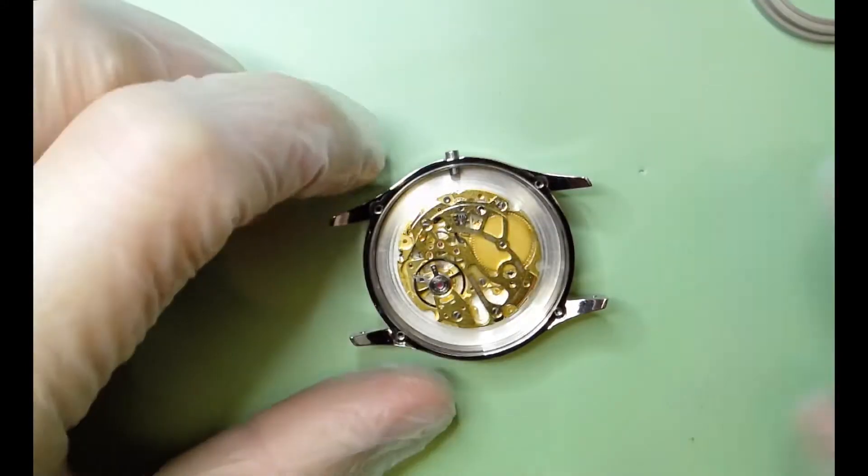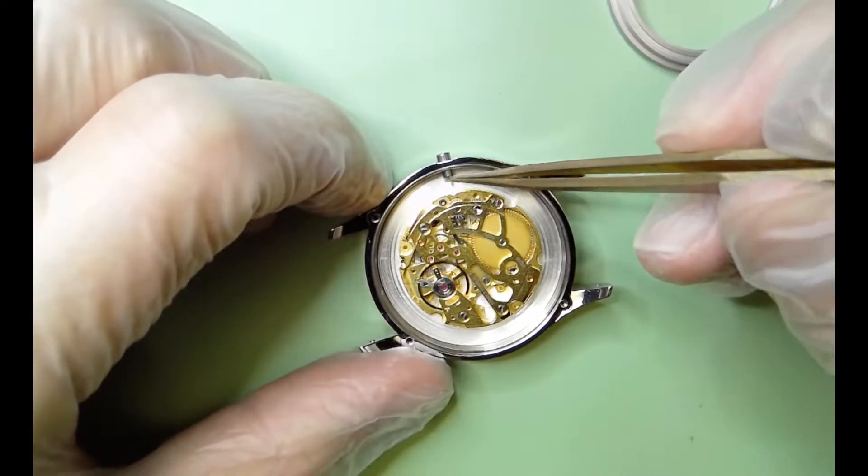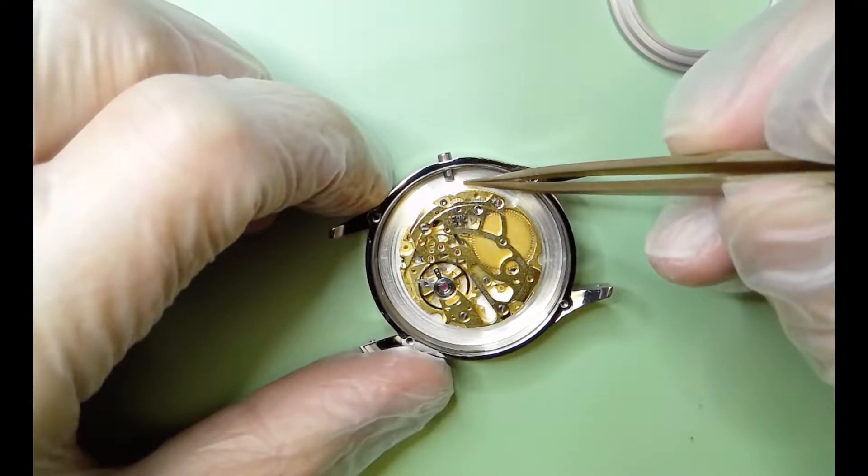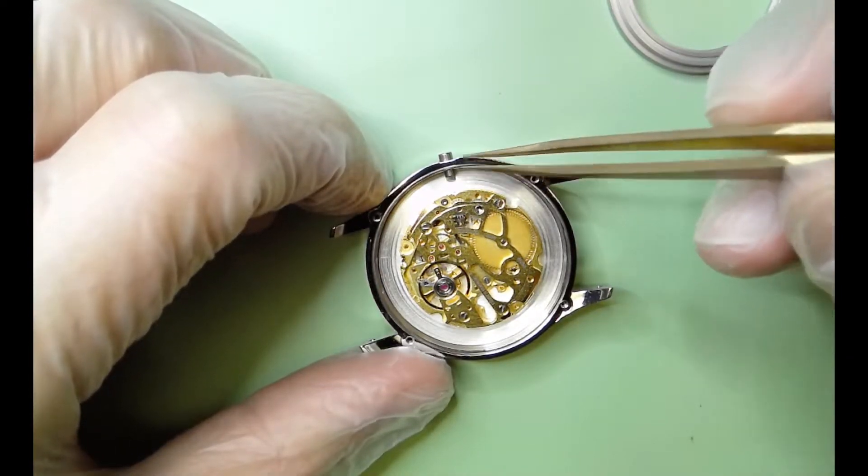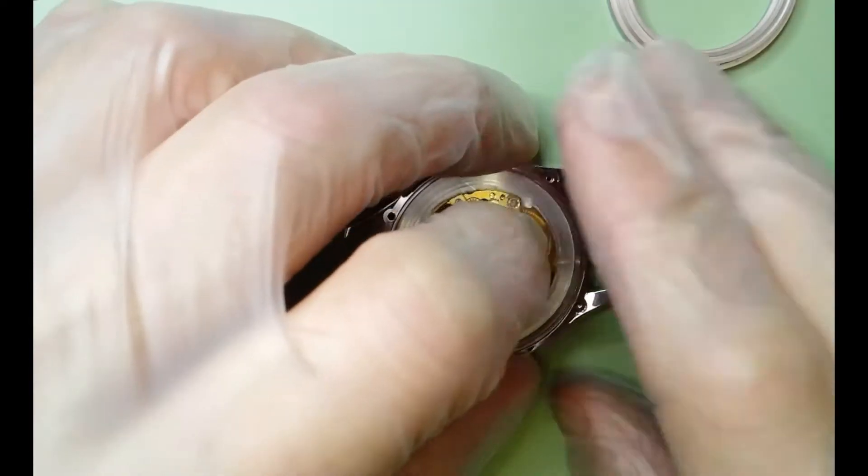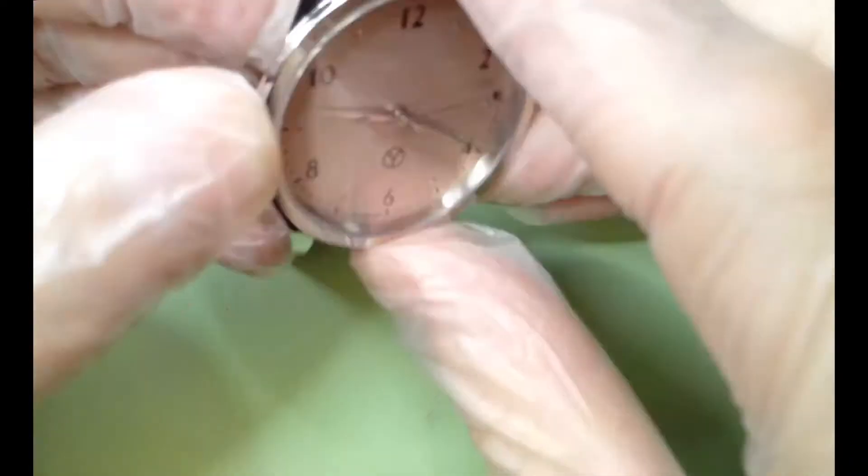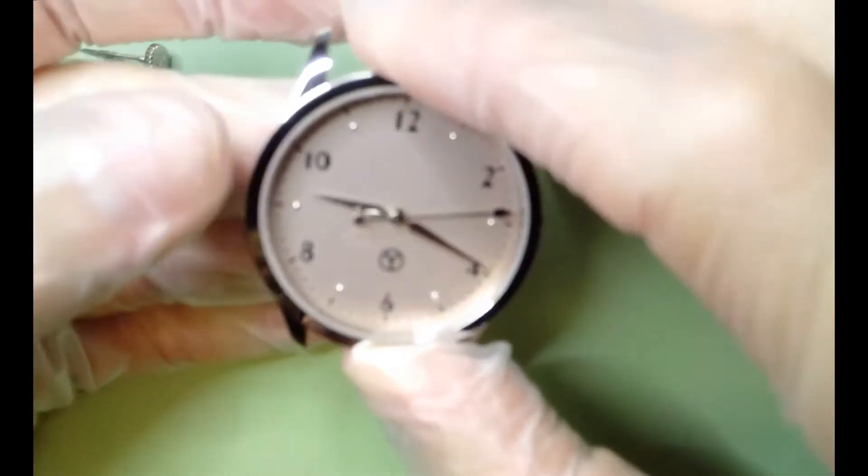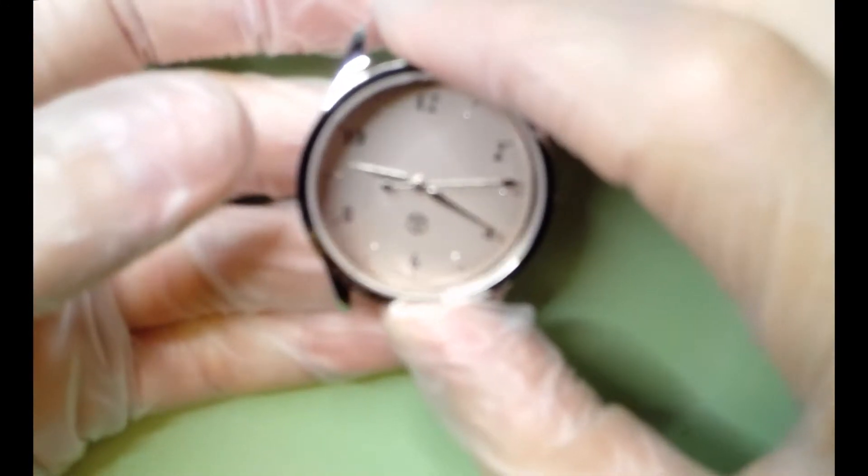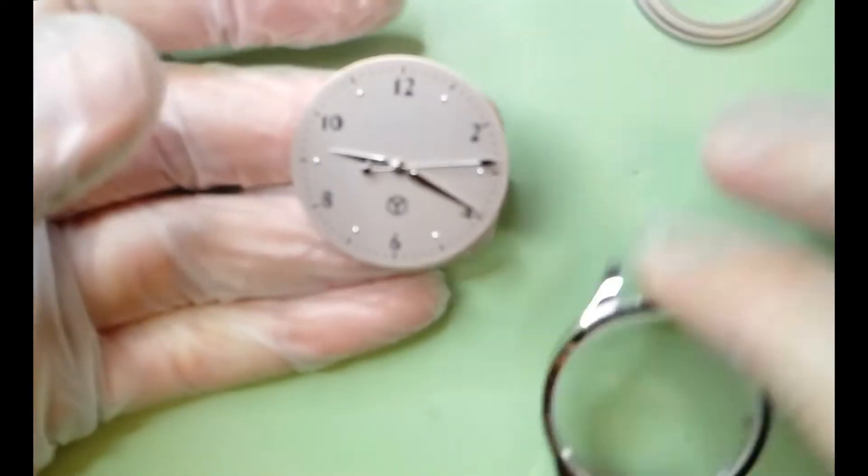I'm going to hold the watch face down because remember we've got the crown tube blocking the dial from coming out completely. So you're going to want to hold it and turn it around as to not scratch it and roll it out nice and easy.